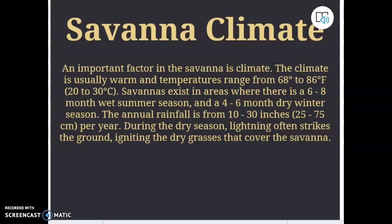An important factor in the savanna is the climate — it's usually warm all year round, between 70 and 86 degrees. There are roughly six to eight months of a wet summer season, then a dry winter where it's still about 68 degrees. The annual rainfall is only 10 to 30 inches, which isn't a lot. During the dry season, lightning strikes can cause grasses to catch fire, but we already know that grass has a special adaptation to overcome that.